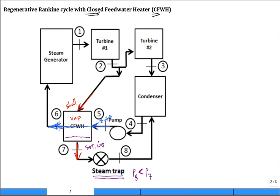When we take a look at the condenser, how many inlets do we have? We have an inlet from 3 and an inlet from 8, and one exit at 4. The pressures at 8, 3, and 4 are all equal. What causes pressure differences? Turbines cause a reduction in pressure, pumps cause a boost in pressure, and steam traps are basically a restriction that causes a reduction in pressure.